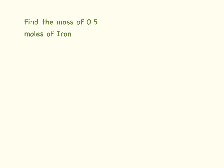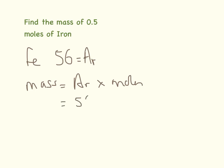So here we need to find the mass of 0.5 moles of iron. So the first thing we need to do is find out the relative molecular mass of iron on the periodic table, and that is 56. That's atomic mass. The equation that we're using is mass equals AR times moles. And here, AR and MR are interchangeable. So the AR is 56. We know from the question we have 0.5 moles. So the mass is going to be 28 grams.